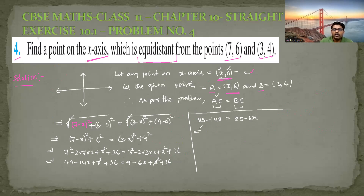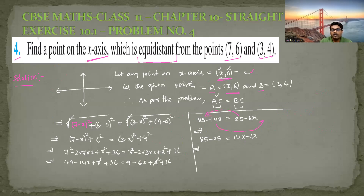Taking x terms to one side and numbers to the other side: 85 minus 25 equals 14x minus 6x. So 60 equals 8x. Therefore x equals 60 divided by 8. Cancelling with 4, x equals 15 by 2.